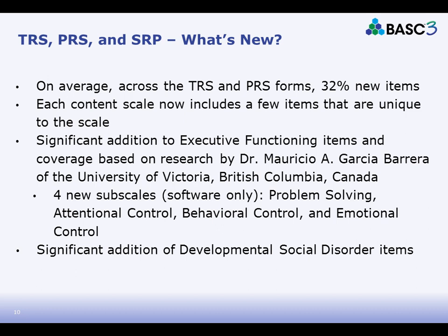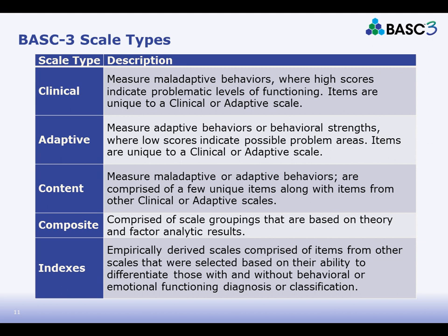The scale types on the BASC-3 are the same as the BASC-2: clinical, adaptive, content, and composite. The index scales are the only new ones, and I'll explain those when we encounter them. Clinical scales are as before, and I've created slides for the TRS, PRS, and Self-Report of Personality — the core of the BASC-3 used most frequently by clinicians — listing existing items carried over from the BASC-2 alongside new items added to improve content coverage, reliability, and validity.